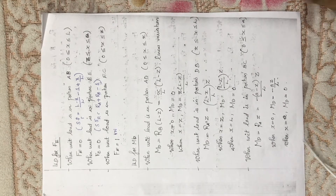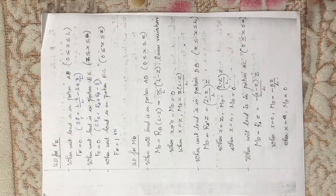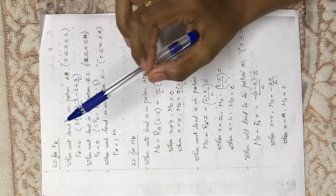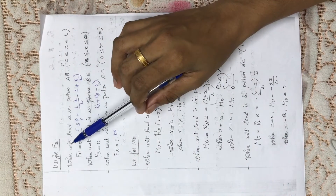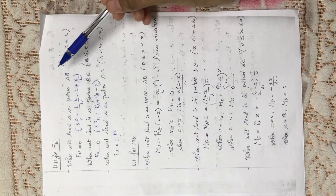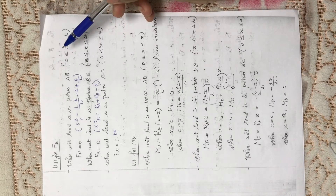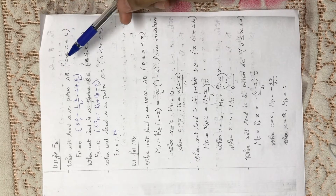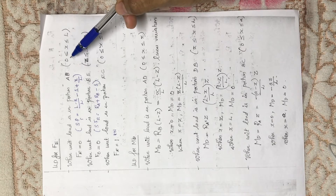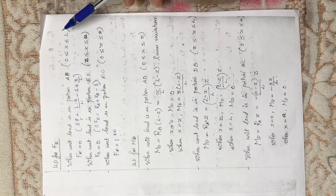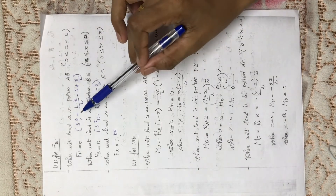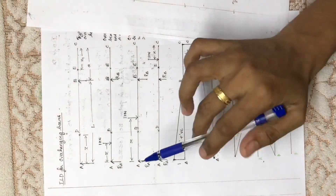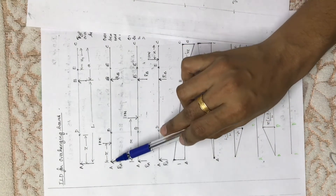Welcome back to the second part of the video. Next we are going to draw the influence line diagram for the shear force at E. For that, first consider the unit load is in the portion AB — that means zero is less than or equal to x, less than or equal to l. The limits are when x is equal to zero and when x is equal to l.